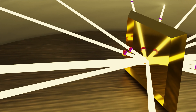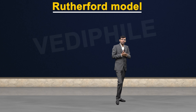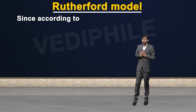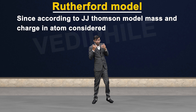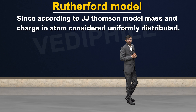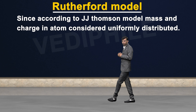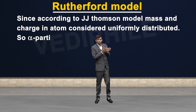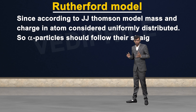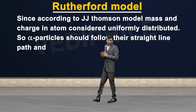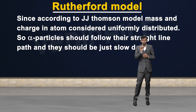Before performing this experiment, the expectation was: according to the JJ Thomson model, the whole mass was distributed uniformly and the whole positive charge was distributed uniformly. So according to the JJ Thomson model, there should not be any deflection in the alpha particles' path — they should just slow down.